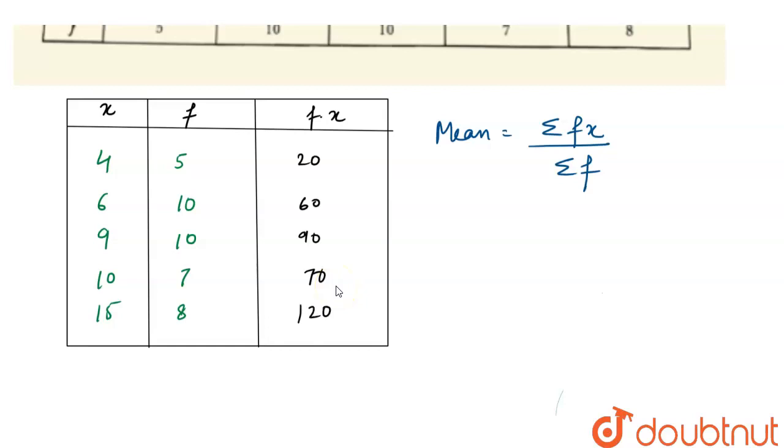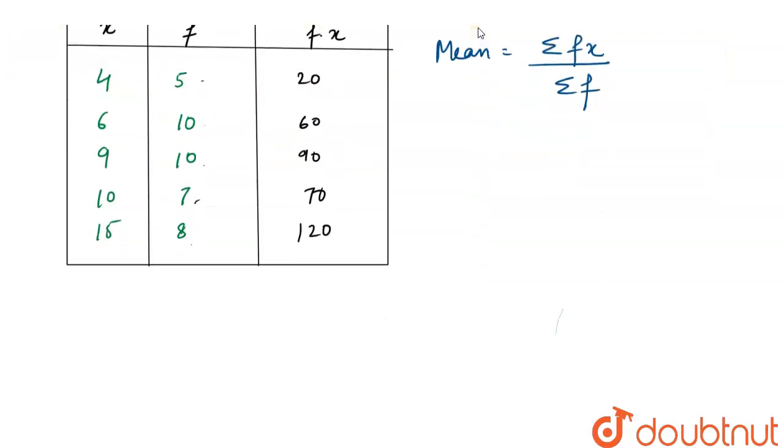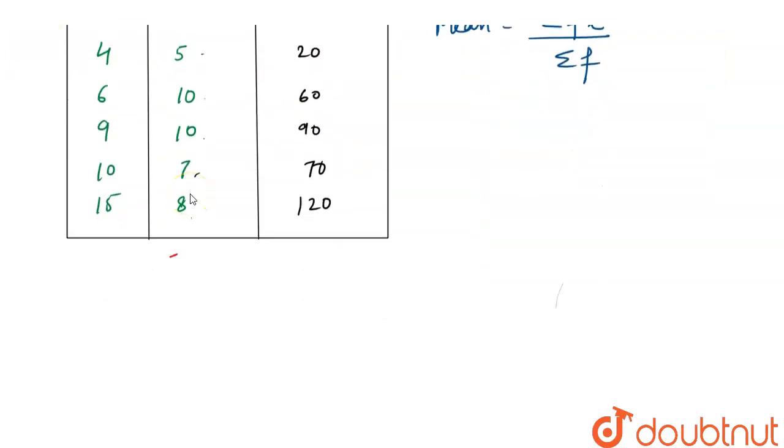Now we have to find the summation of all these terms of f. That will be 25 plus 7 plus 8, so sigma f equals 40.